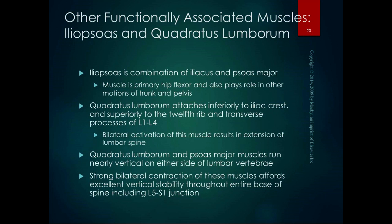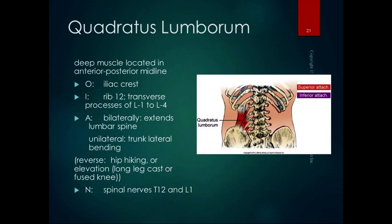The quadratus lumborum is very deep, located in the anterior-posterior midline. It originates on the iliac crest, going up to rib 12 and the transverse processes of L1 to L4. Bilaterally it provides vertical stabilization with a slight line of pull for extension. Unilaterally, in closed chain it does trunk lateral bending; in open chain it produces hip hiking or elevation — for example, if you have a long leg cast or fused knee, you hike the hip to clear the foot while walking. It gets spinal nerves T12 and L1.